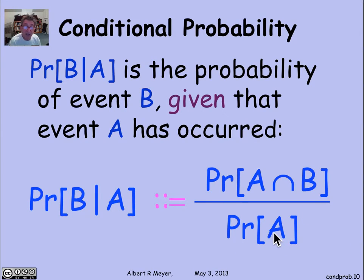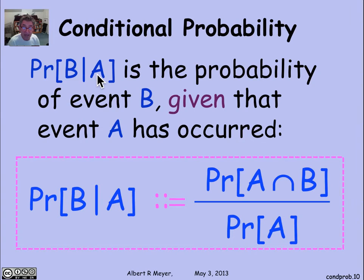Notice that implicit in this definition is the probability of A better not be 0. So you can't condition on an event that has 0 probability. The probability of B given A is only defined if probability of A is positive.